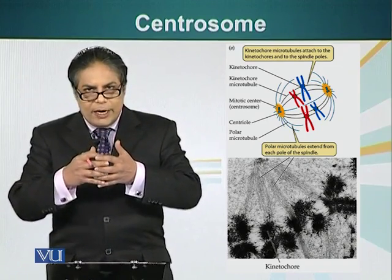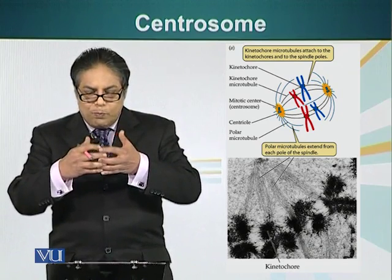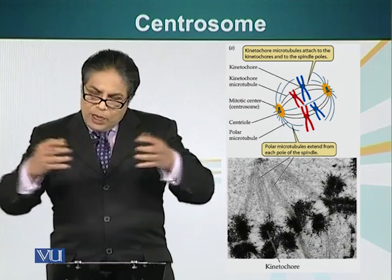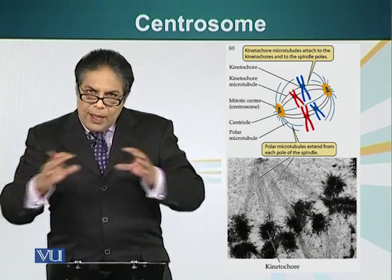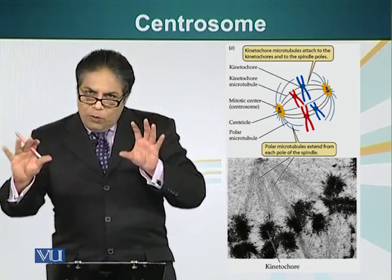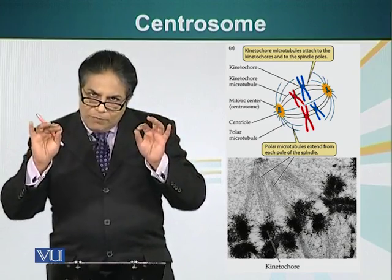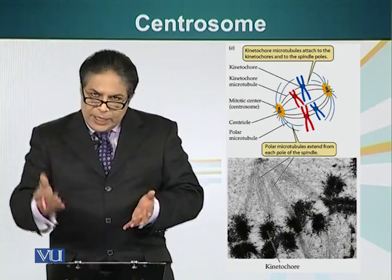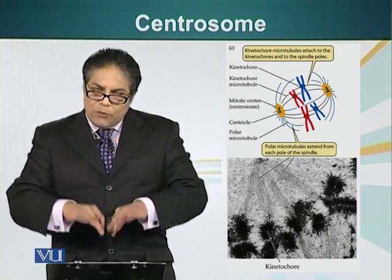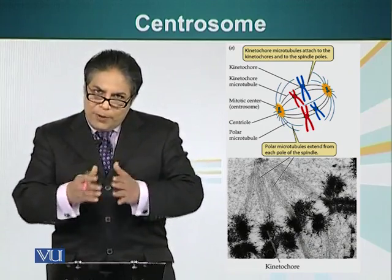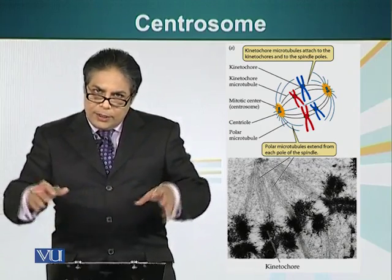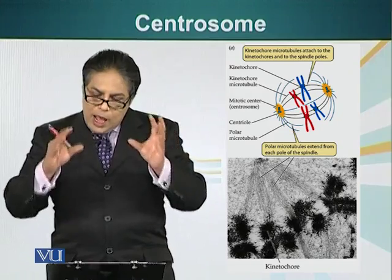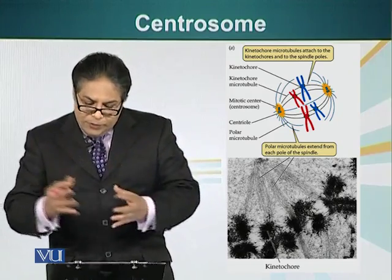The force is generated between the microtubules. When the force is generated, the two centrosomes are pulled apart or pushed apart, resulting in two poles, each containing one centrosome and a set of chromosomes. In the next stage, a membrane is formed between these two sets of chromosomes and centrosomes, resulting in two different cells.